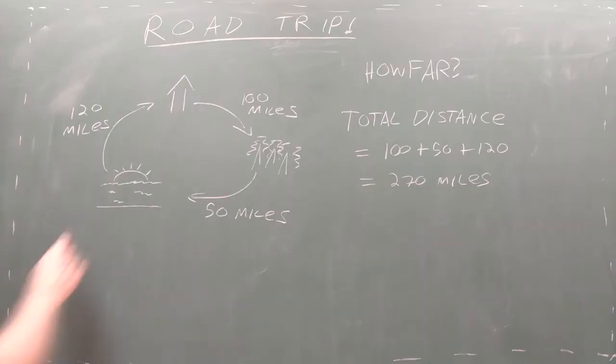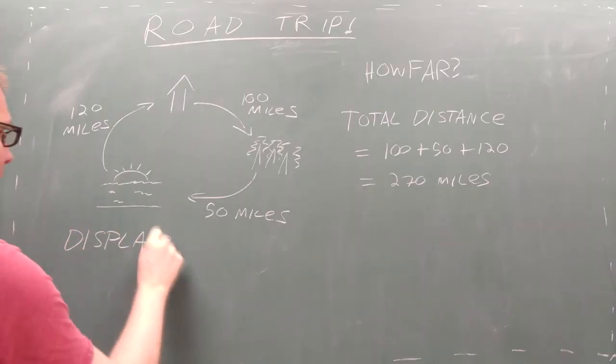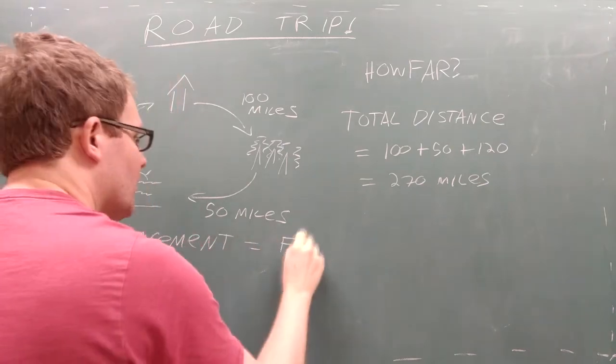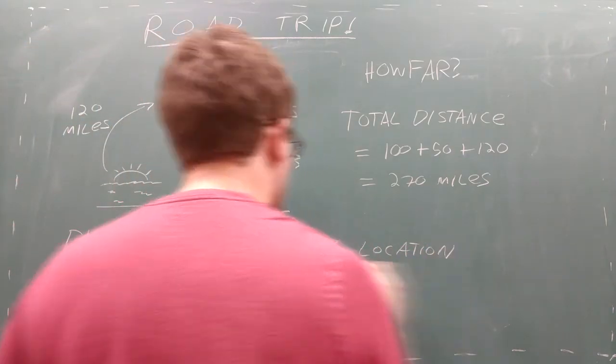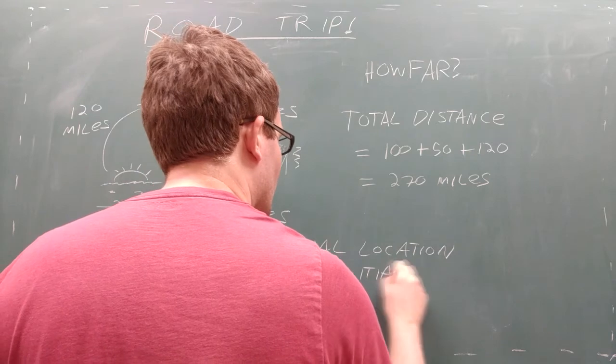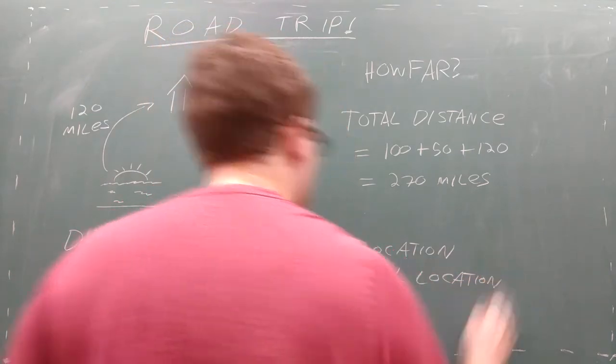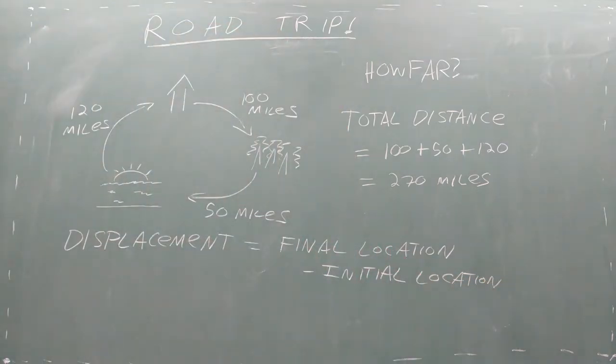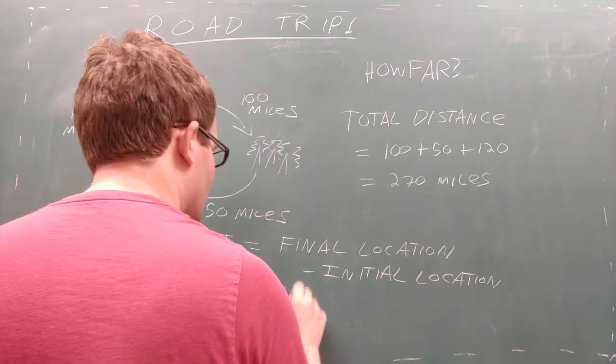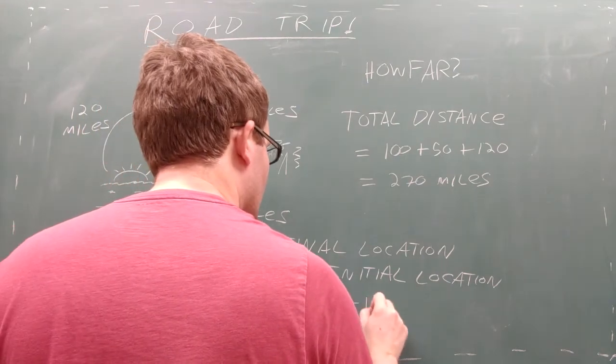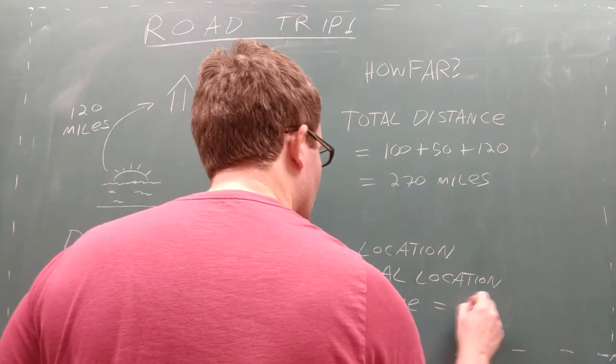On the other hand, the second answer involves calculating the displacement from beginning to end. Displacement doesn't care about how many destinations you visited, or how much gas your car consumed. It only cares about how far apart your final location and initial location are from each other. In this case, your initial and final locations are the same, so your displacement is exactly zero.